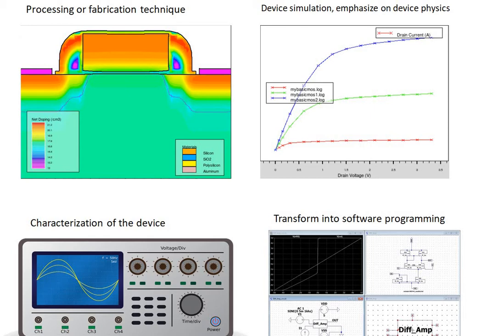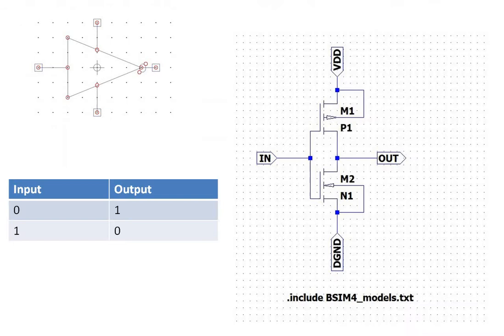The CMOS inverter forms the basic building block of any digital circuit, with 90% of integrated circuits fabricated using CMOS technology. When the input is low, the output of the CMOS inverter is high, and vice versa.